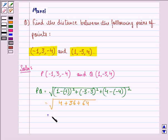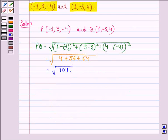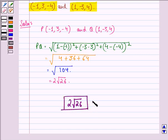That is equal to square root of 104, that is equal to 2 root 26. So we can say that our answer to this question is that the distance between these two points is 2 root 26. I hope that you understood the question and enjoyed the session. Have a good day.